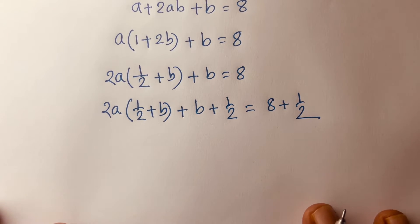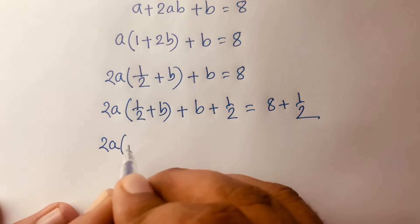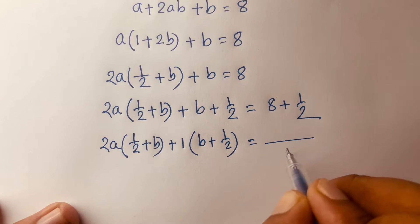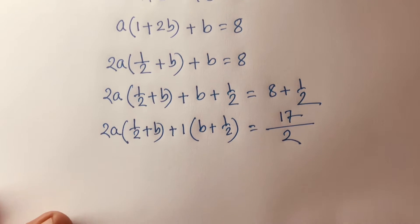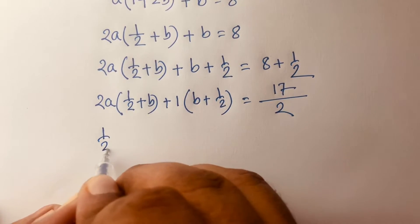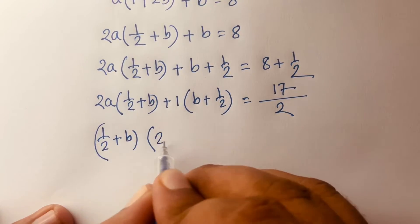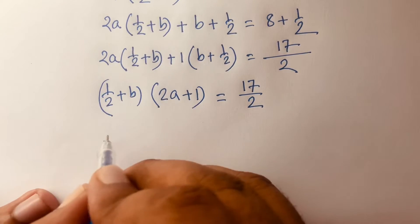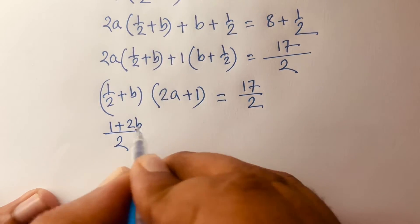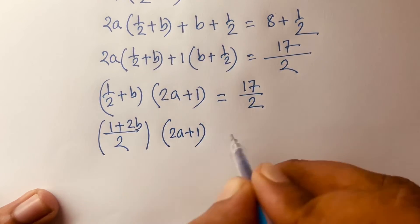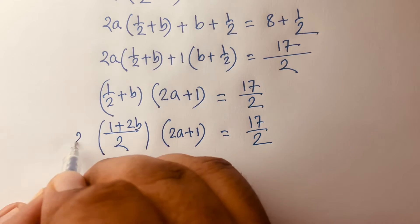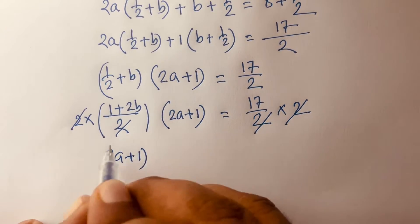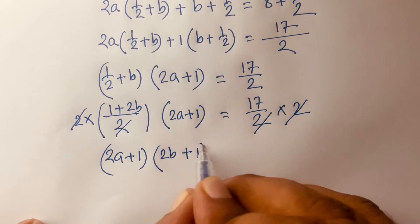So it becomes 2a times (1/2 plus b) plus 1 times (b plus 1/2) equals 17/2. Then (1/2 plus b) is common, so (2a plus 1) times (b plus 1/2) equals 17/2. Multiplying both sides by 2, we get (2a plus 1) times (2b plus 1) is equal to 17.